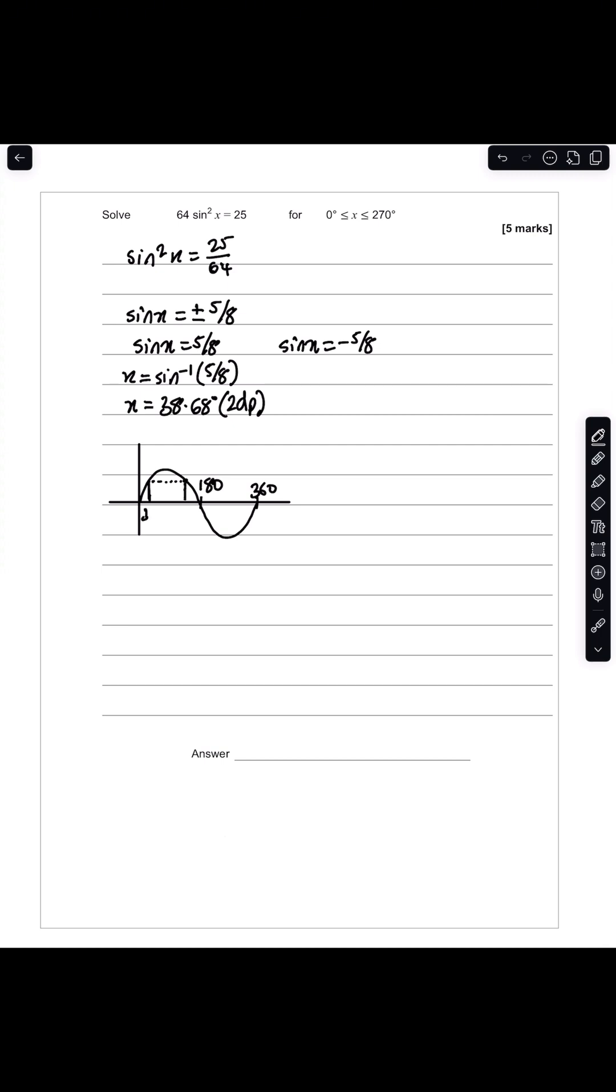So this value is 38.68, which is the difference between zero and that point. Then we know that to obtain the second value, I can just subtract that value from 180 degrees, in which case I'll be left with 141.31 degrees. So that will be my two values, and you can see that they both lie in this range, so I'm happy with that.